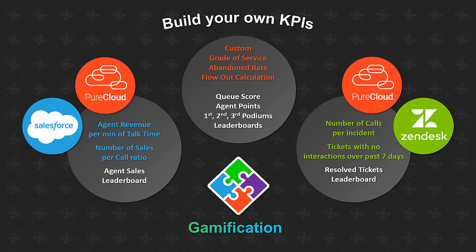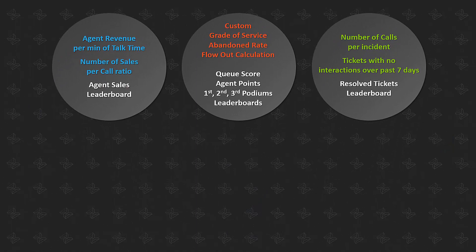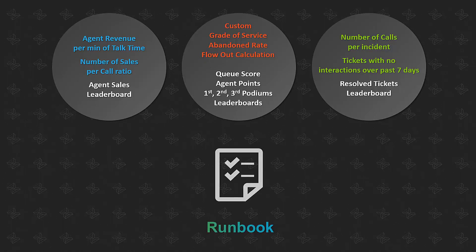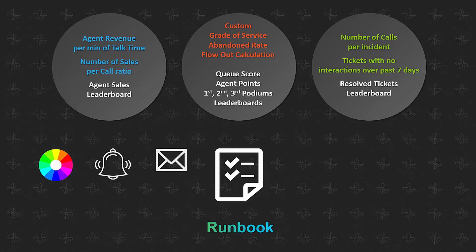You might be thinking: this is great that I can build all these cool KPIs, but how do I get alerted when things pass a threshold? Well, that brings us to runbook. Emite allows you to configure a multitude of color changes on the dashboard itself. You can set up audio alerts, email alerts, SMS alerts, phone call alerts, and you can even write your own piece of custom code to do whatever you like — for example, updating a team message on a dashboard.